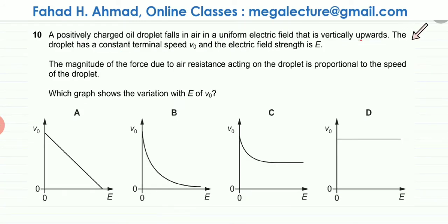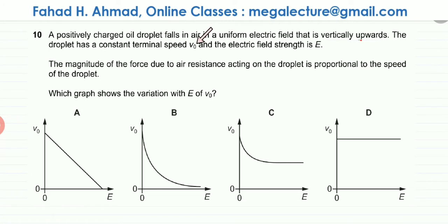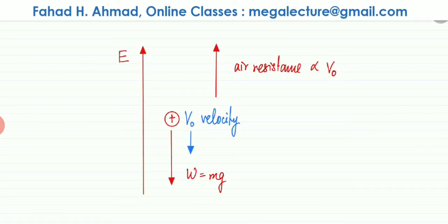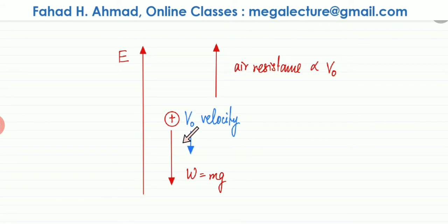The droplet has a constant terminal velocity V₀ and the electric field strength is E. The magnitude of the force due to air resistance acting on the droplet is proportional to the speed of the droplet. So there is air resistance proportional to the speed, and it's falling with a constant terminal velocity V₀. Air resistance acts upward, proportional to V₀, while the weight acts downward.